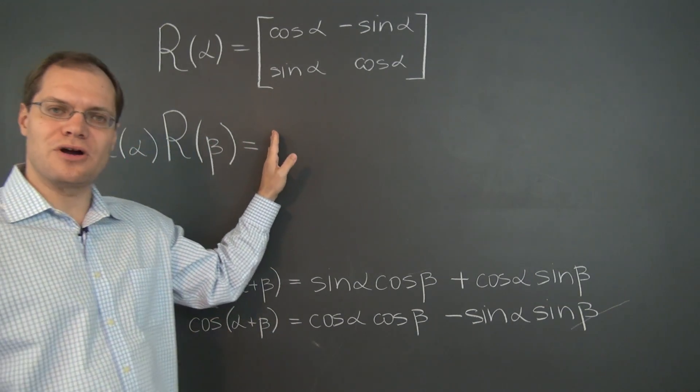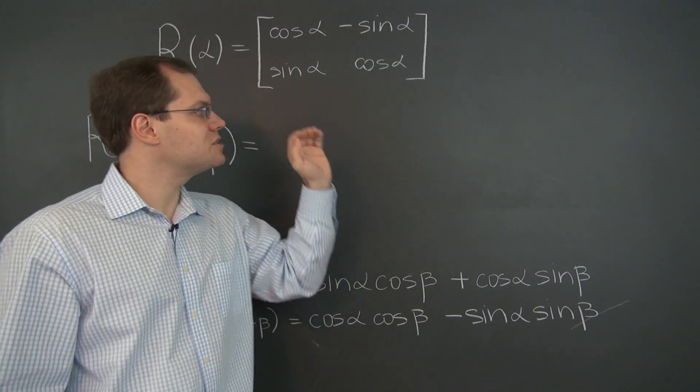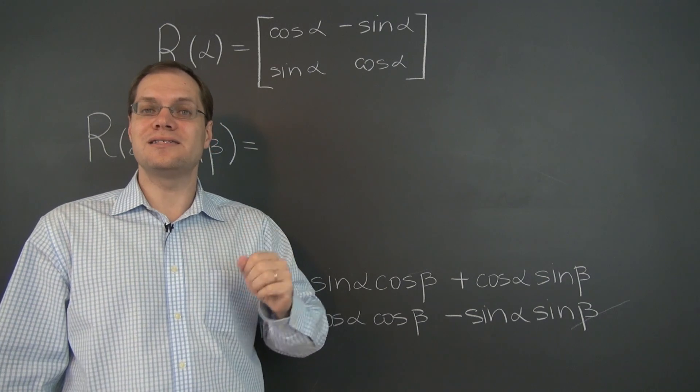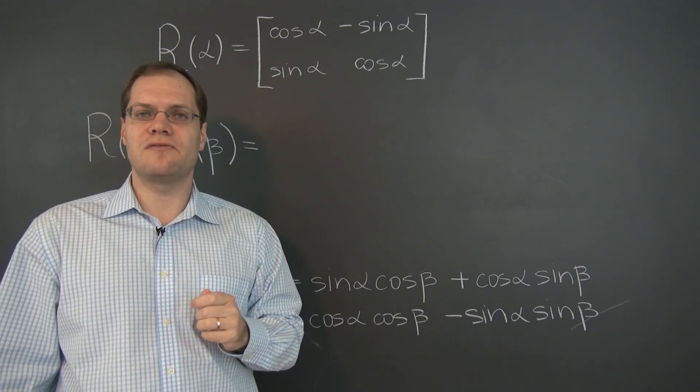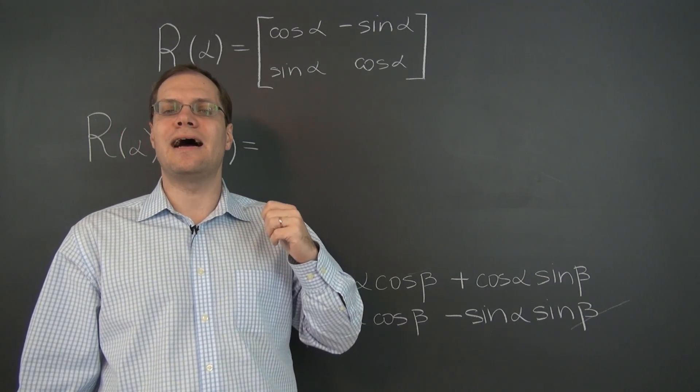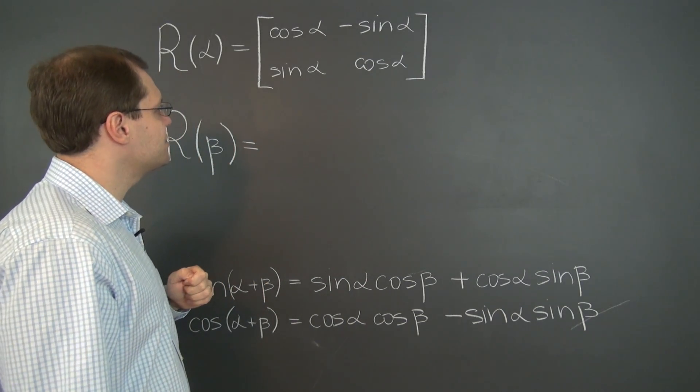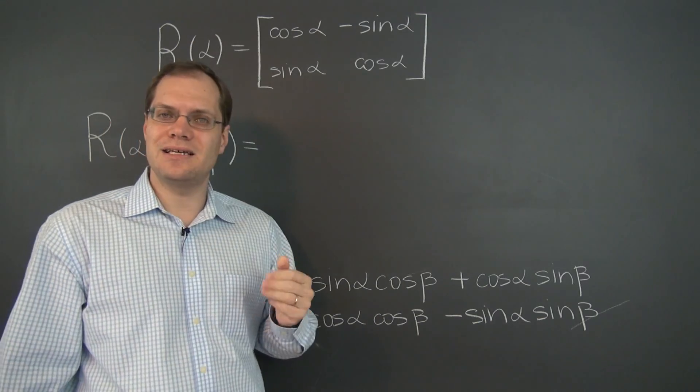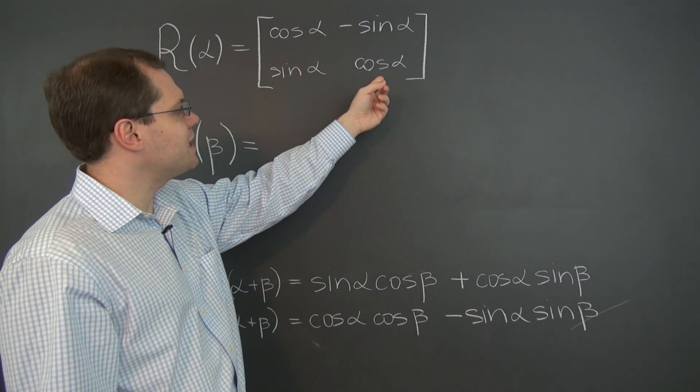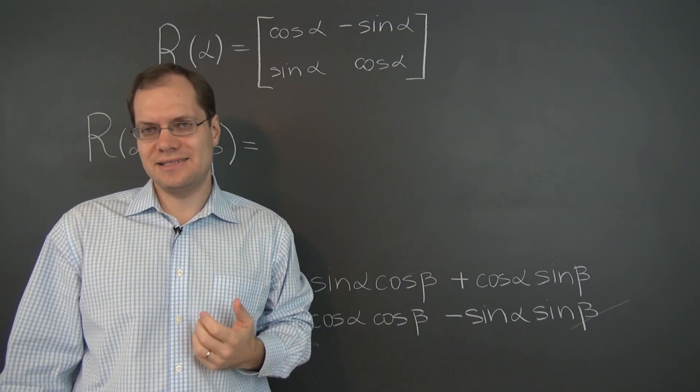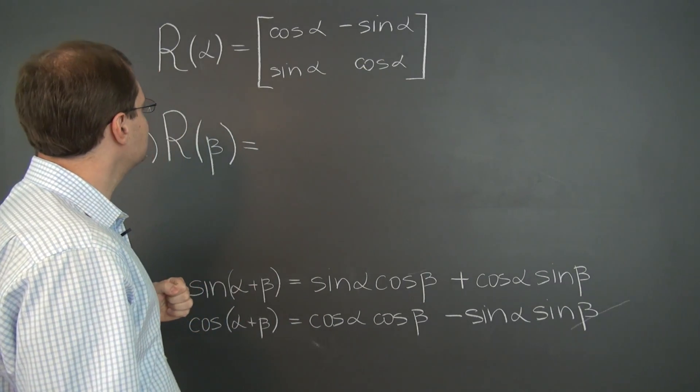Now before we consider this product, let me ask you a few questions about R of alpha because it has some interesting properties. First, what happens when we plug in alpha equals zero? R of zero is the identity matrix because cosine zero is one and sine zero is zero, so we're left with the identity matrix. That's very interesting.